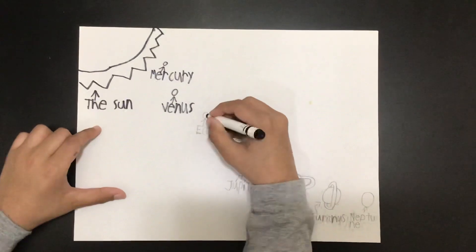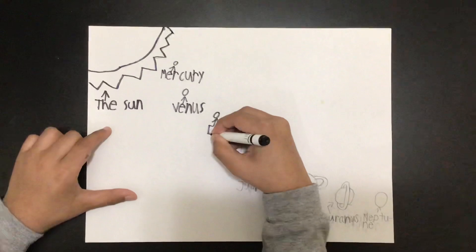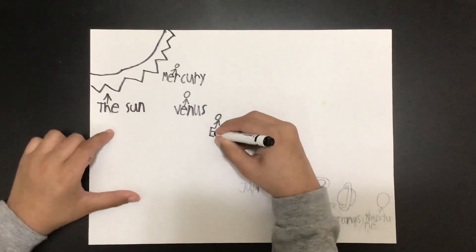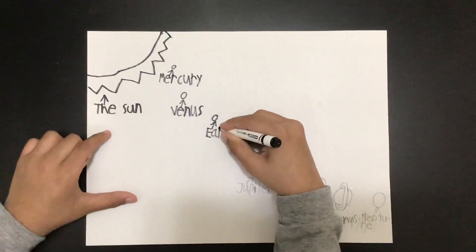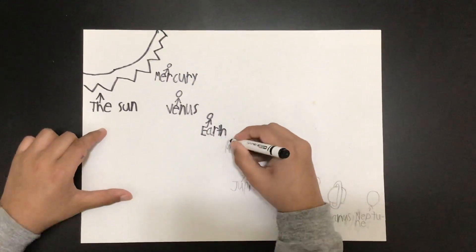This is our home planet Earth. It is the third planet from the sun. We call the place where Earth is the Goldilocks zone.